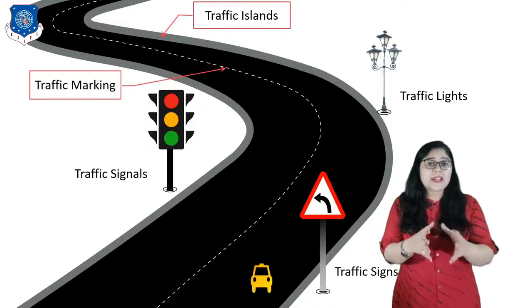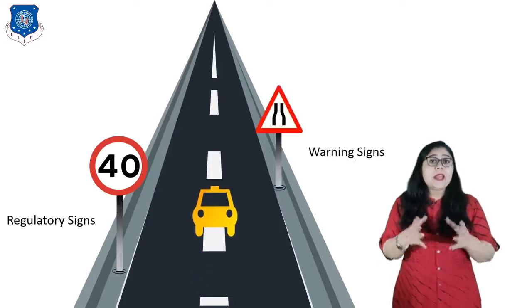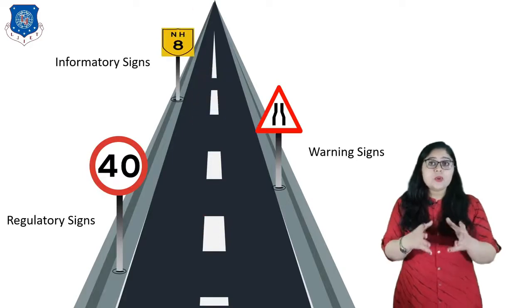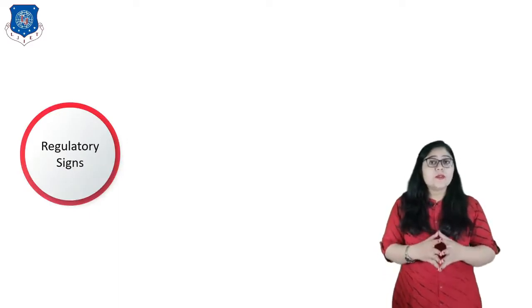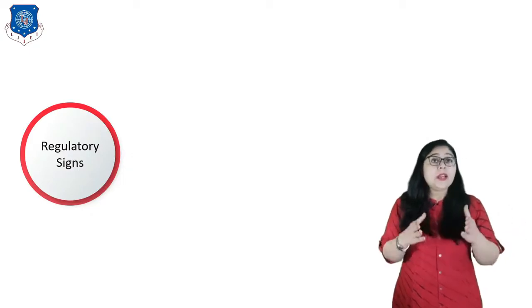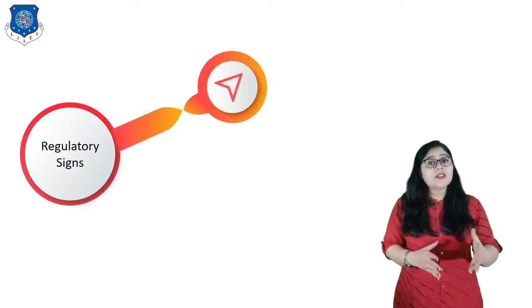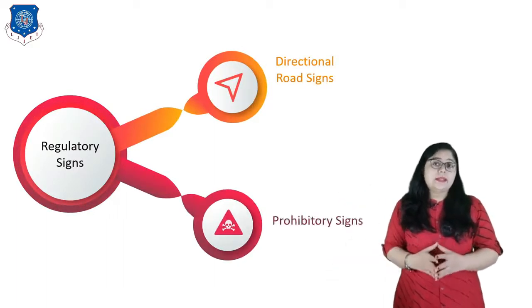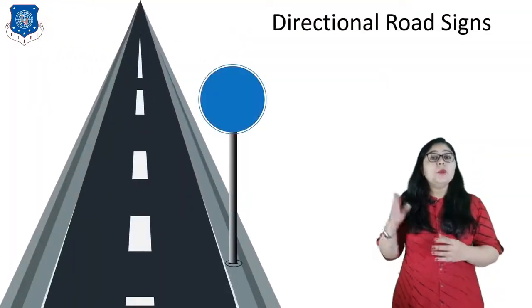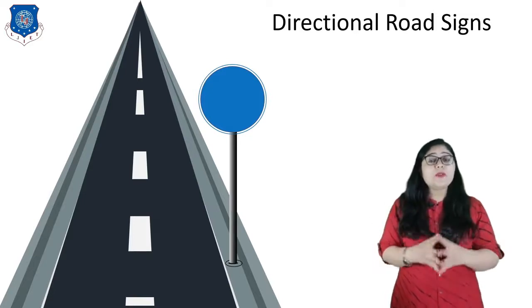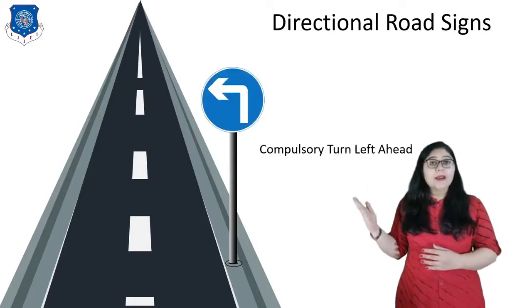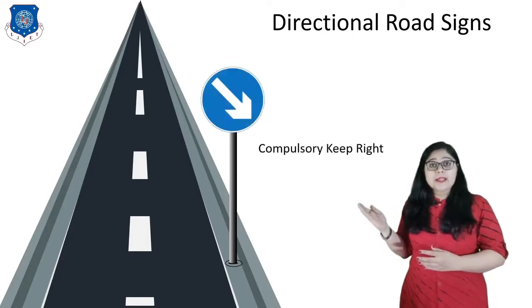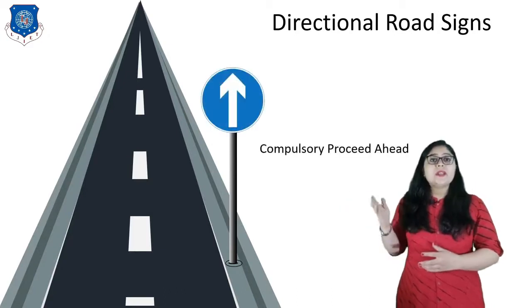Now let us discuss traffic signs first. It is classified as regulatory signs, warning signs, and informatory signs. Regulatory signs are meant to inform road users of certain laws, regulations and prohibitions. They are further classified into two types: directional road signs and prohibitory signs. Directional road signs have a blue background and white symbols. Different types include compulsory turn left, compulsory turn right, compulsory turn left ahead, compulsory turn right ahead, compulsory keep right, compulsory keep left, and compulsory proceed ahead.